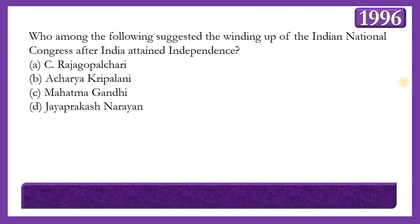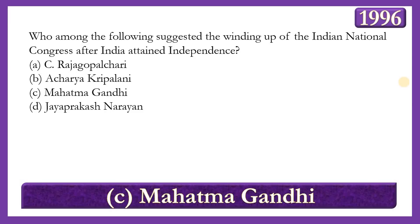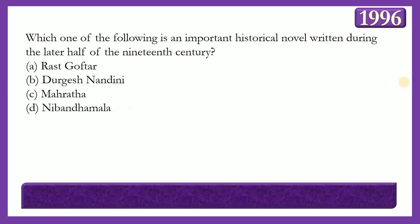Next question: Who among the following suggested the winding up of the Indian National Congress after India attained independence? Options: C. Rajagopalachari, J.B. Kripalani, Mahatma Gandhi, or Jayaprakash Narayan. The answer is option C — Mahatma Gandhi — who asked top Congress leaders to dissolve the party and form a new organization for serving the people, stating that the task of the INC was to fight for the freedom of India from British rule, which had been achieved.